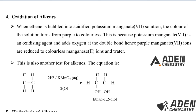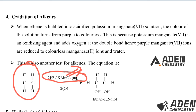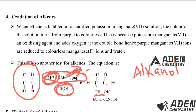Ethene reacts with acidified potassium manganate(VII). The potassium manganate(VII) has been acidified, giving two hydrogen ions, and the oxidizing agent adds two atoms of oxygen at the double bond, breaking it up. We now have two carbons with bonds, four hydrogen atoms from ethene, plus two more hydrogen atoms from the sulfuric acid, and two oxygen atoms — one on each carbon. To name the product: two carbon atoms gives the prefix 'eth-'; the functional groups are OH at positions one and two; 'di' because there are two OH groups; giving the suffix '-diol'. The compound is ethane-1,2-diol.